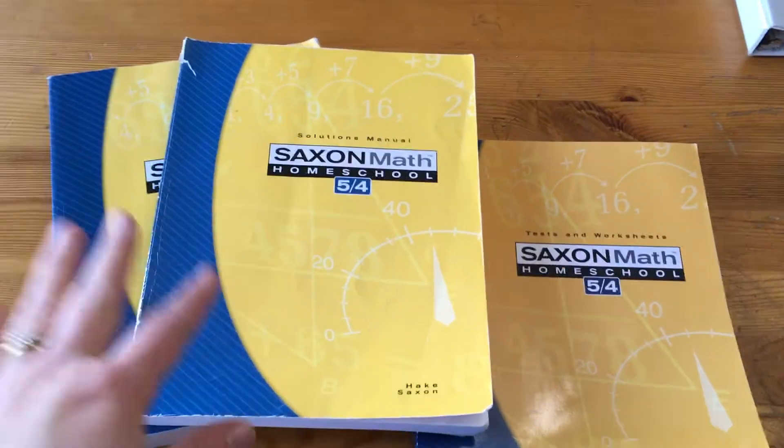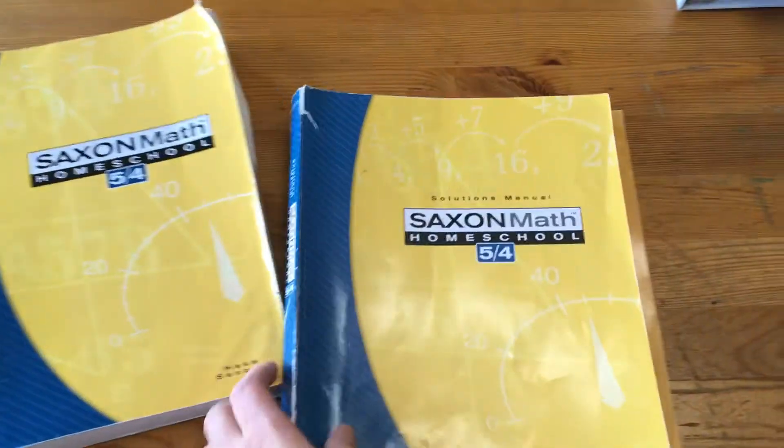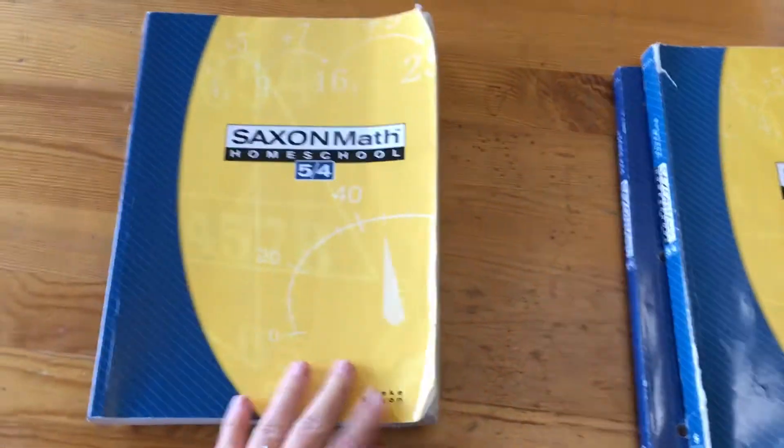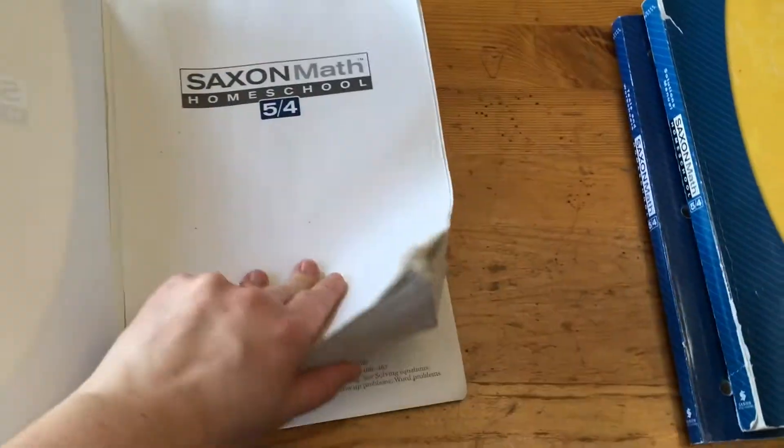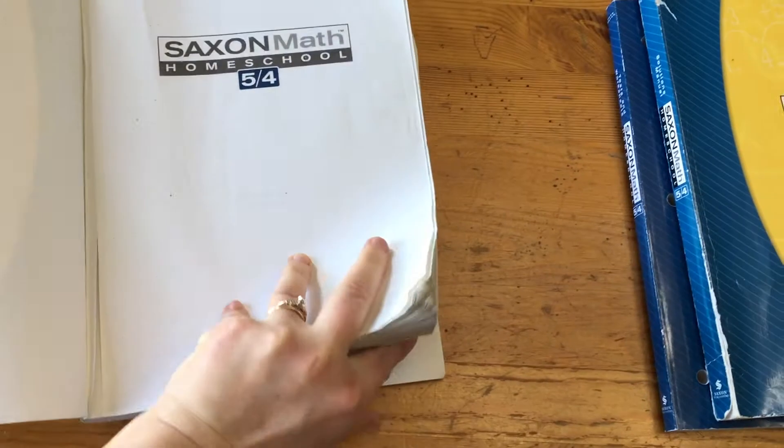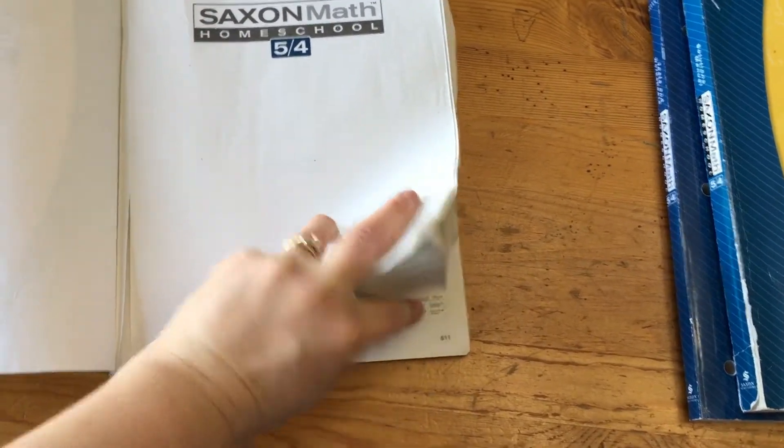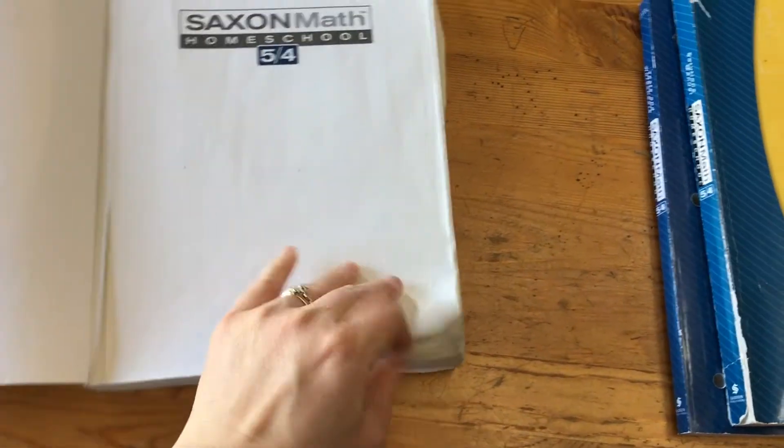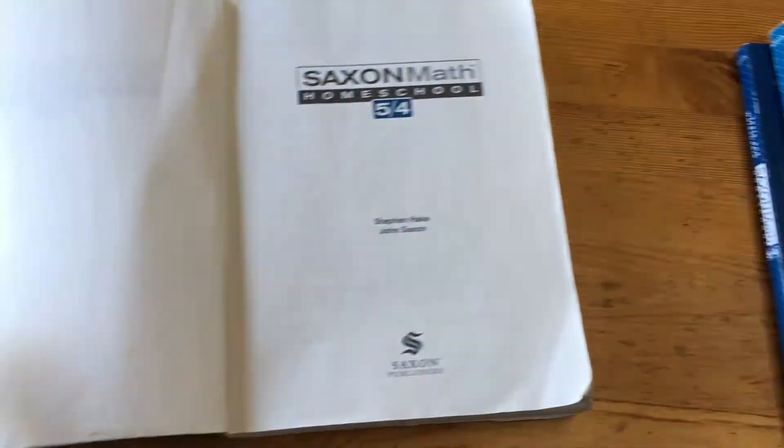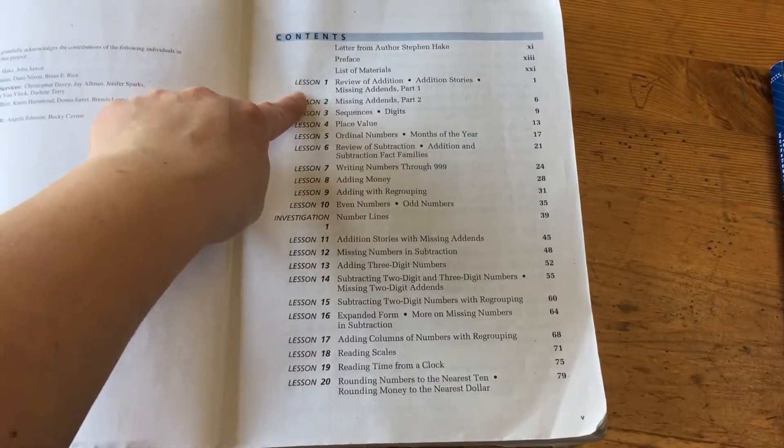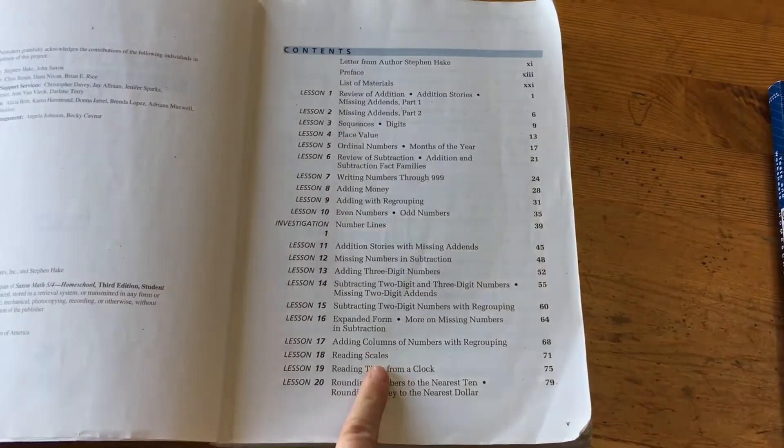So we'll start off with the 5-4. So this is the book that the student is going to be using. It is quite thick, over 600 pages. Starts off in the beginning here with how many lessons there are, what is included in each lesson, as well as the page number.